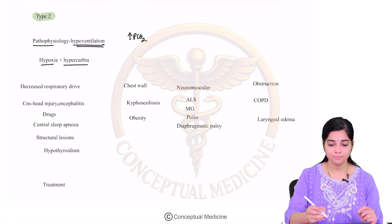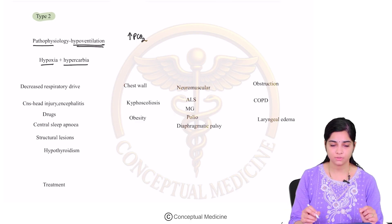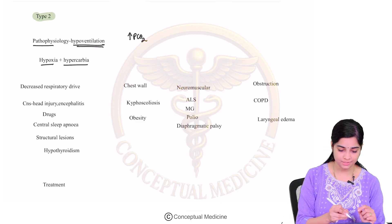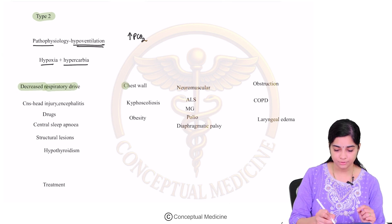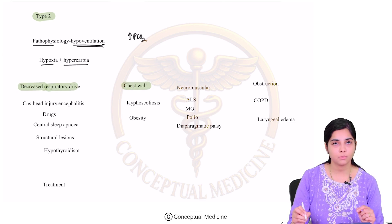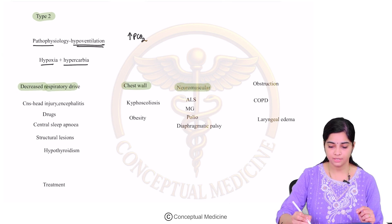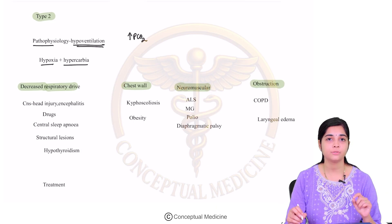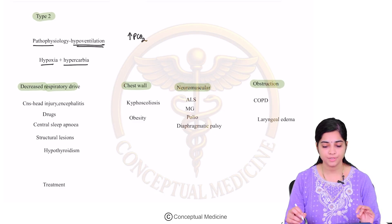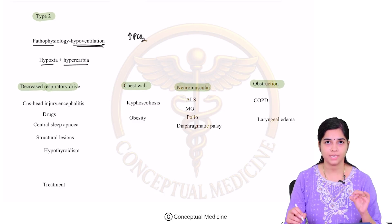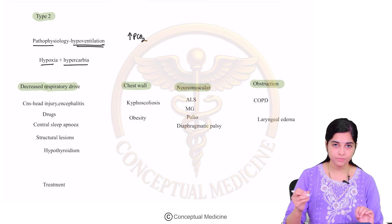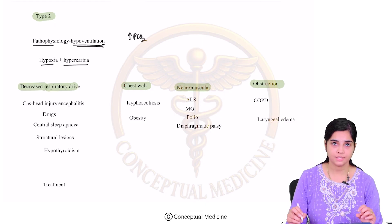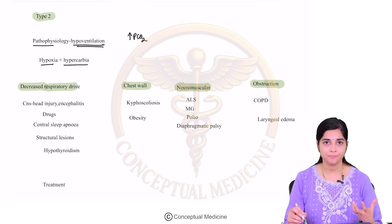The major causes of type 2 respiratory failure include decreased respiratory drive, chest wall disorders, neuromuscular disorders, and obstruction. Decreased respiratory drive — when does that happen?